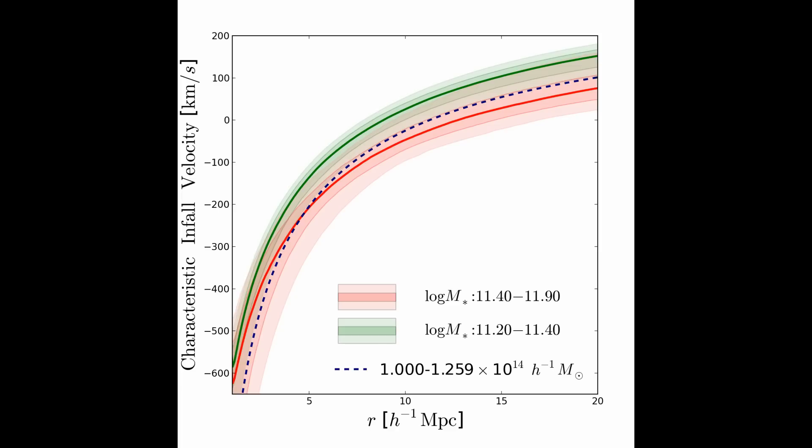The colored bands show the inferred characteristic infall velocities for the two bins of Sloan clusters. Red is the higher mass bin and green is lower.